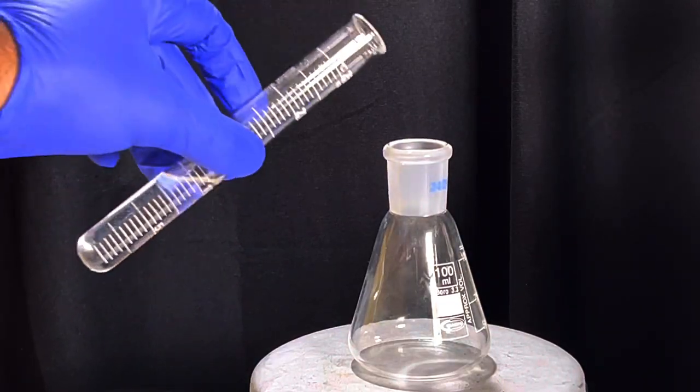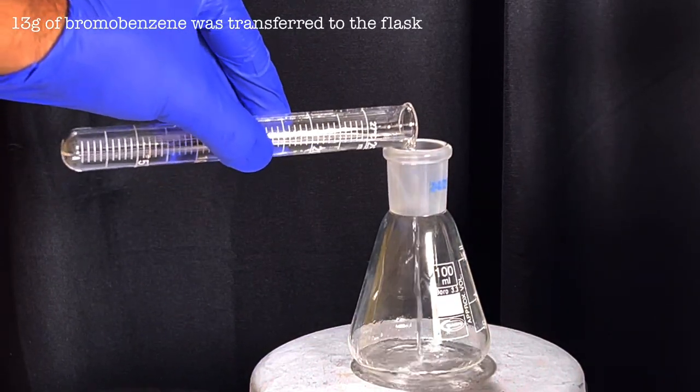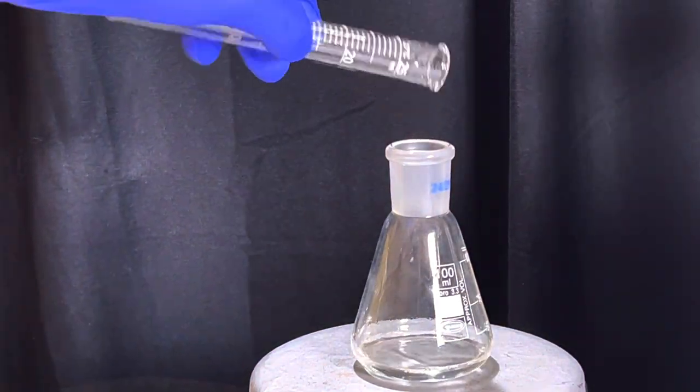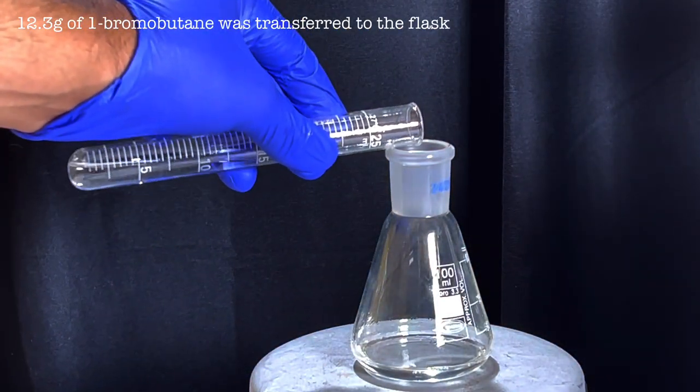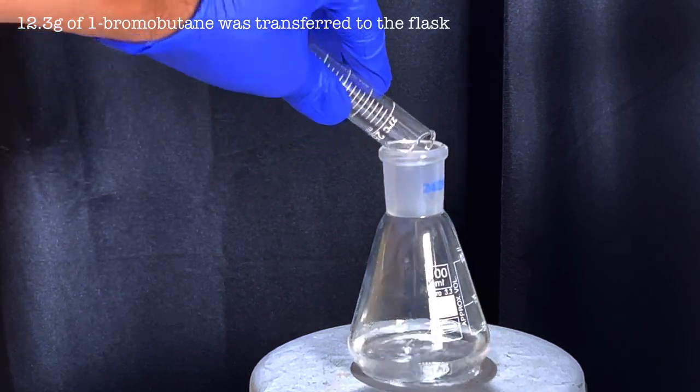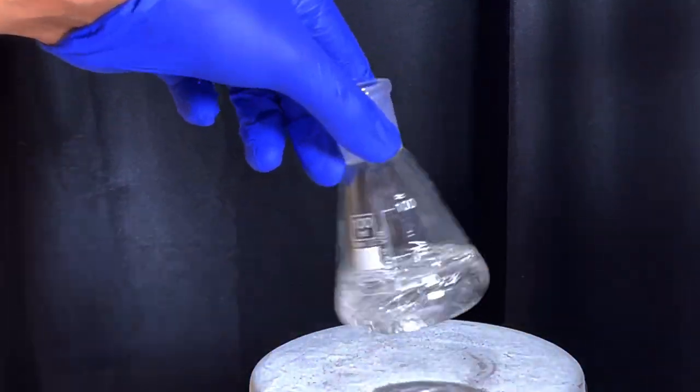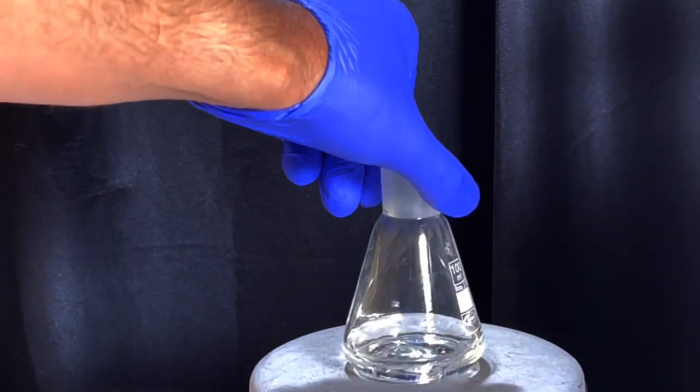Start by taking a 100 ml Erlenmeyer flask and add 15 grams of bromobenzene to it. Then add 12.3 grams of 1-bromobutane. Shake the flask to mix the contents and it will result in a clear solution.